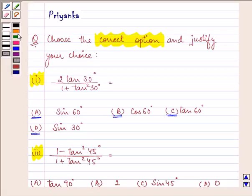Now we will be doing our calculation in the rough part here. Now we know that the value of tan 30 degree is 1 by root 3.